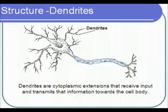Dendrite branches can be quite extensive and can receive information from thousands of other neurons.